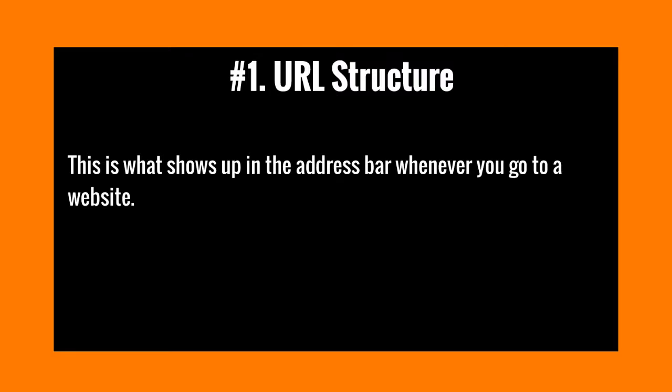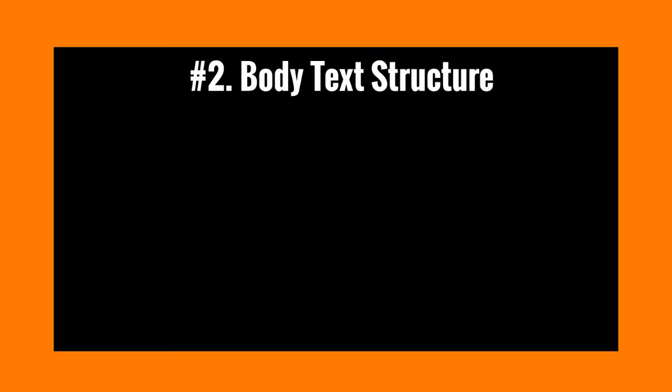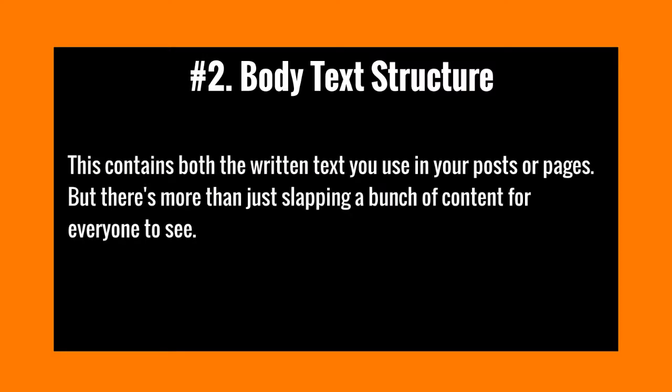That's just one element — there are a lot of other elements as well. Number two, we have the body text structure, which contains basically everything on your post or page in terms of content. This includes all written text you use in your posts and pages, and there's more to it than just putting a bunch of content out for everyone to see. I'm going to break things down so you have a better idea of what you should include in your body text structure.